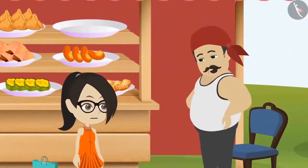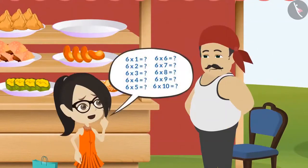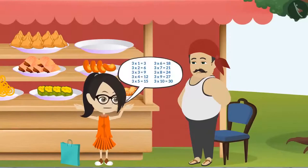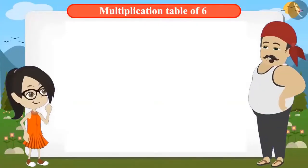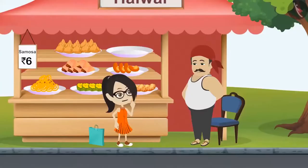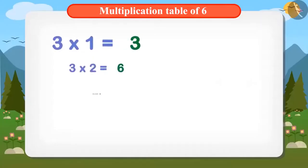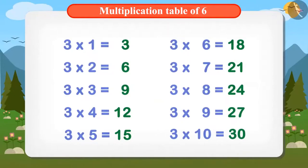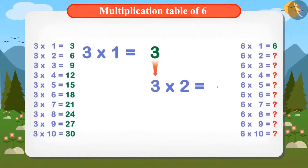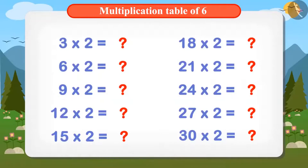Uncle, I do not know the table of 6. So what? Do you know the multiplication table of 3? Yes. Then you can easily find out the multiplication table of 6 from the multiplication table of 3. See, this is the multiplication table of 3. If you multiply 2 with the first answer in the table of 3, the answer will be 6, which will be the first answer in the table of 6. Similarly, multiplying the answers from the table of 3 with 2 will give the complete multiplication table of 6.